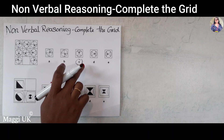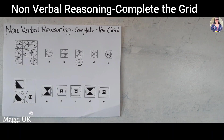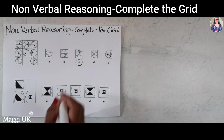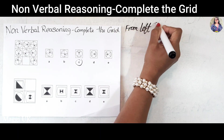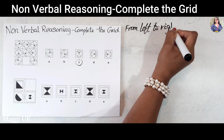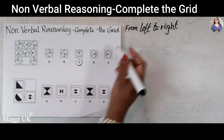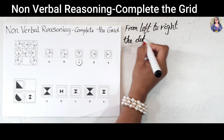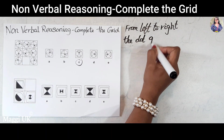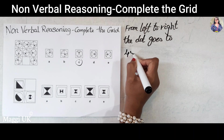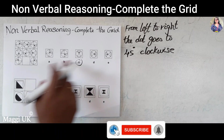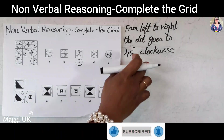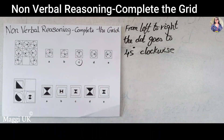So we have the answer for this and I need to write the reason so that you can be clear why I got that answer. From left to right, the dot goes 45 degrees clockwise. That's why we want this shape for C — that is the reason why we got the answer for C.